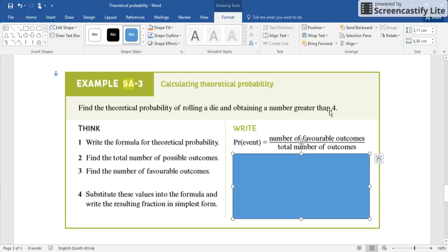Well, we said we want 5 or 6. So those are 2 favorable outcomes divided by your total number of outcomes. How many outcomes could you have? Well, it's a dice, so you could have 6 different outcomes.